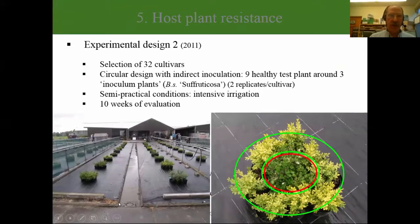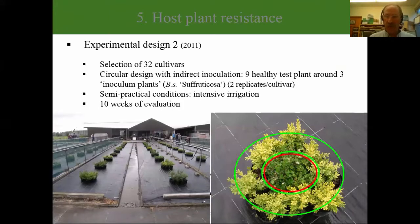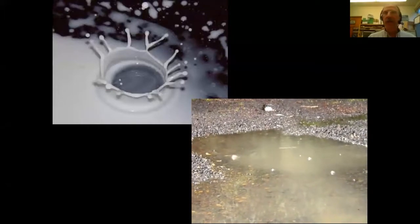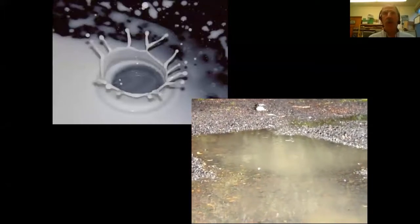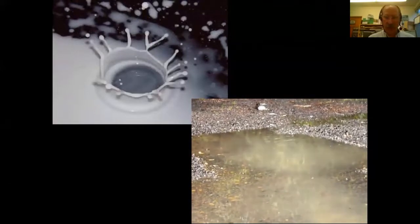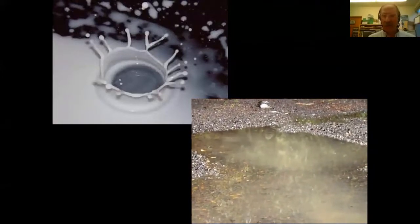The rain-splash dispersal mechanism is especially important for nurseries. The key takeaway is that sticky spores are liberated and splashed around during rainstorms — that is when the disease gets going and spreads.